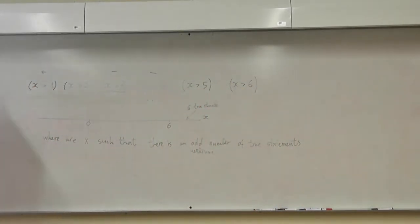This part doesn't work for us, there are all six true statements, and we're interested in where there's an odd number of true statements. So from zero to six, there should be either exactly one true, or exactly three true, or exactly five true.